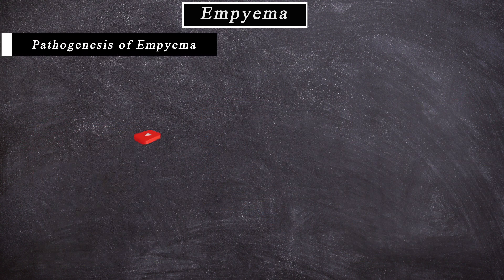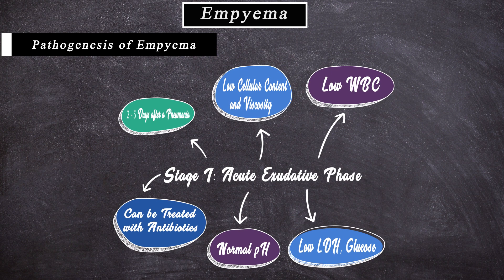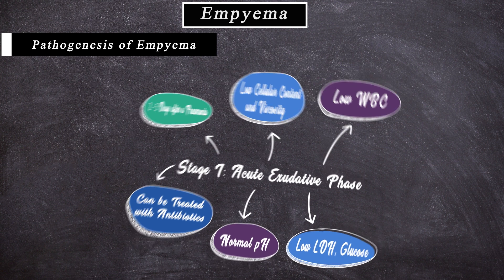The pathogenesis of Empyema classically occurs in three clinical stages. Stage 1 is the acute exudative phase, which typically occurs two to five days after pneumonia. There is accumulation of fluid with low cellular content and viscosity. This phase is characterized by low white blood cells, LDH, glucose, and normal pH. It can be successfully treated with antibiotics only.